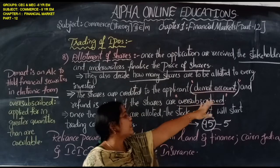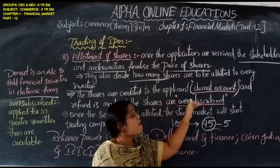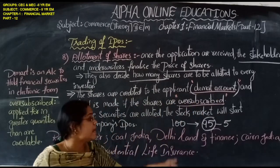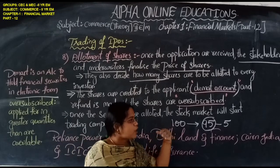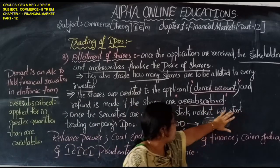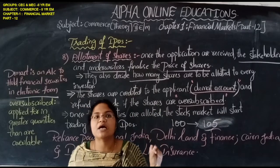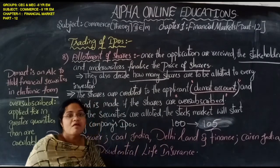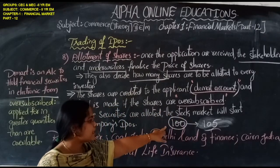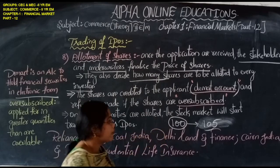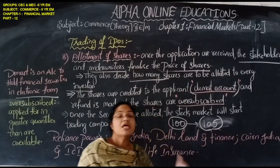A refund is made when shares are oversubscribed. For example, if 100 shares are issued but the demand exceeds that amount, the excess applications are rejected and refunds are issued to unsuccessful applicants.